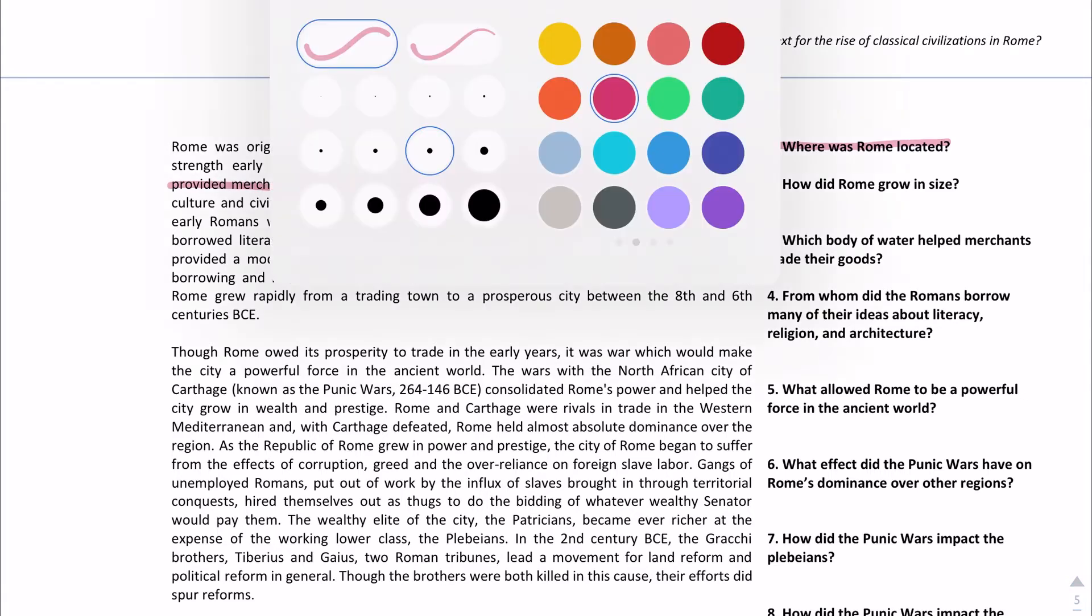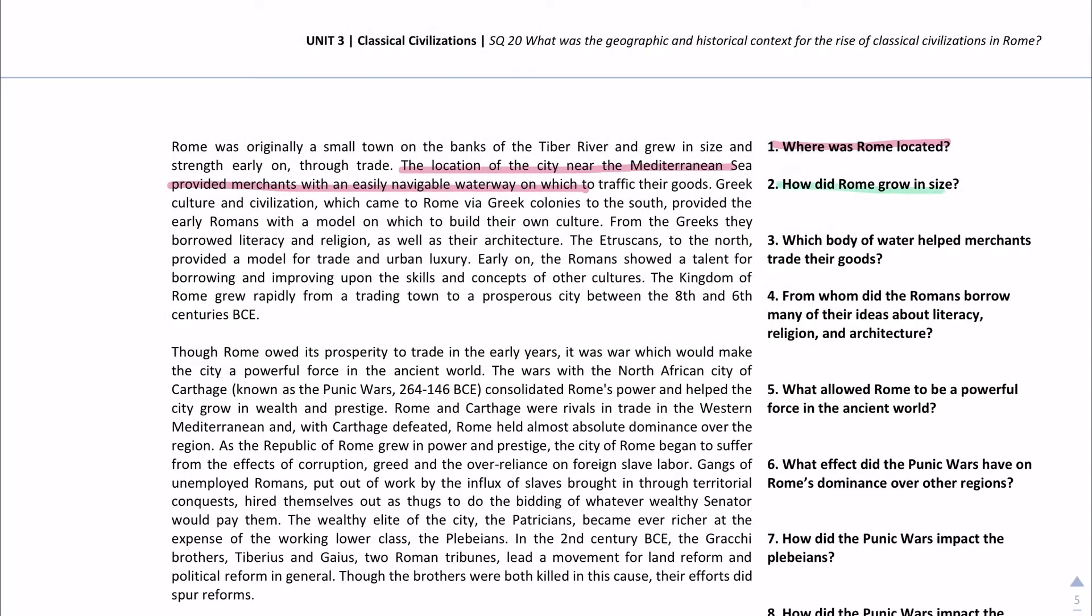The first thing we could do is highlighting style. You can color code your answers. Like the next one for example, you want to do in green, and the next one's in blue. You could just highlight your answers in the text wherever you find it.